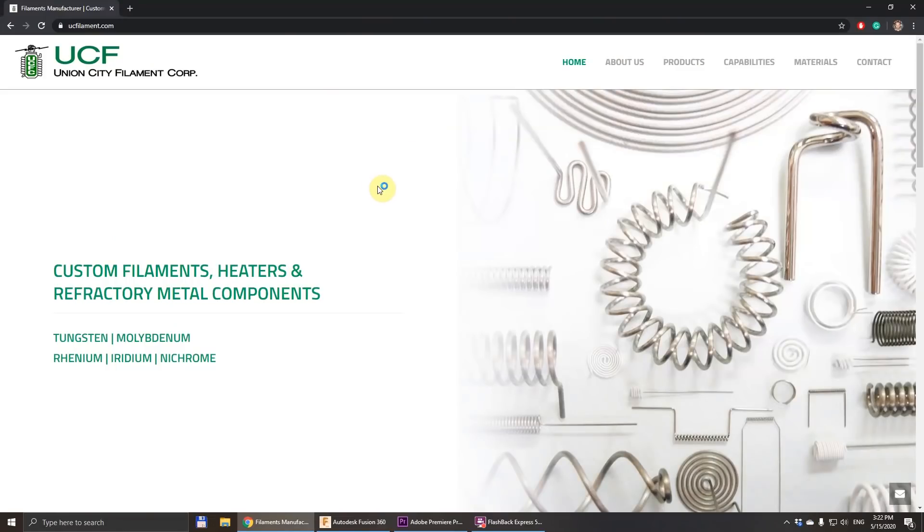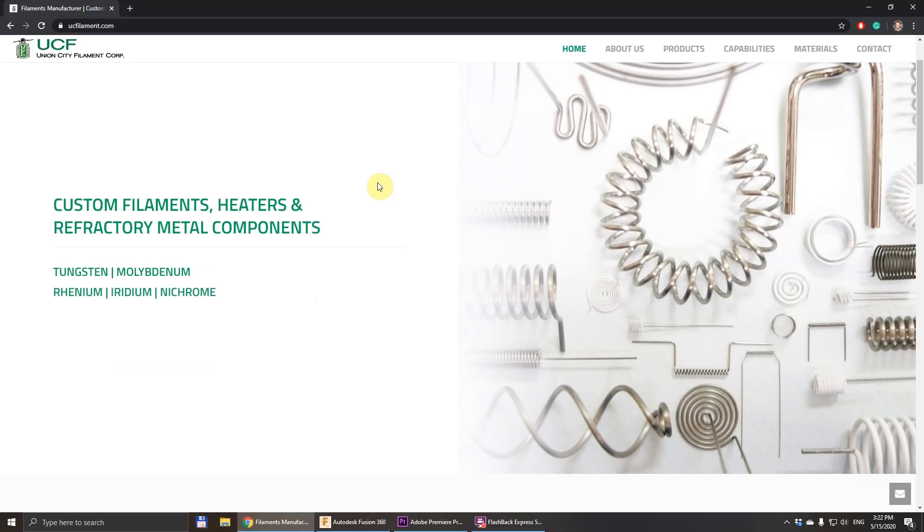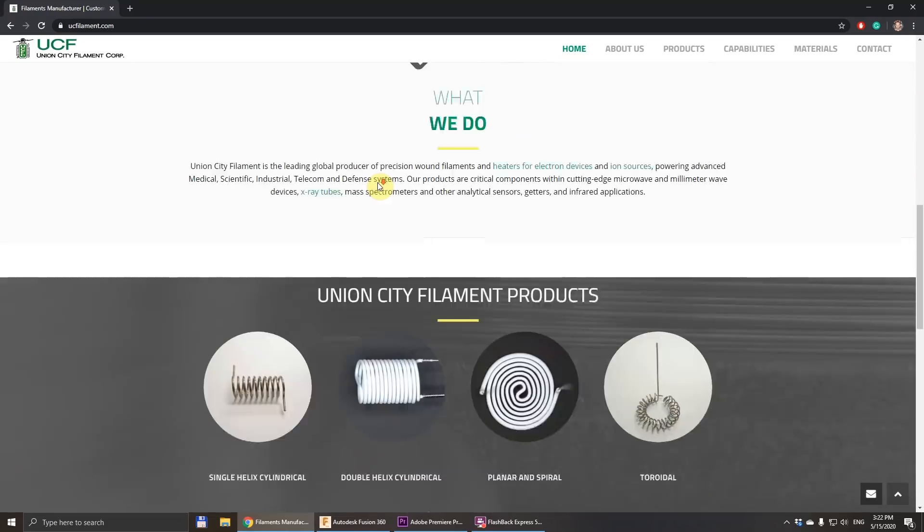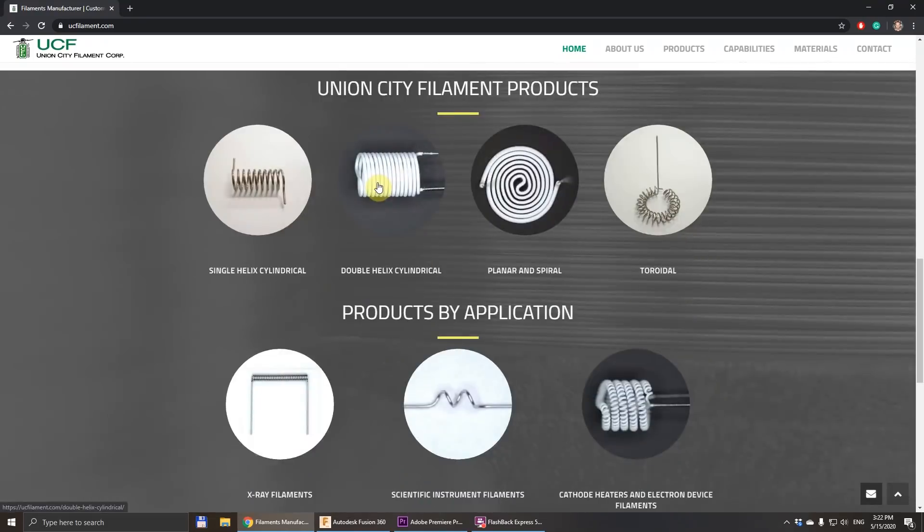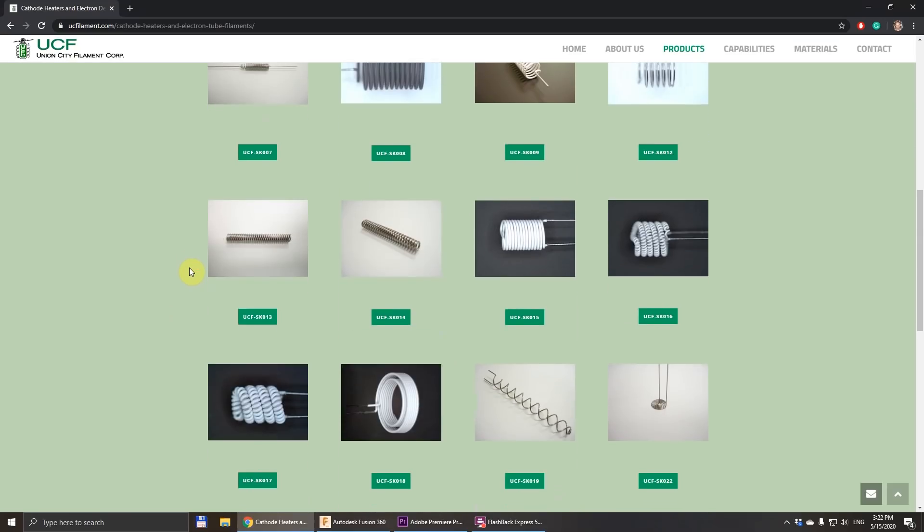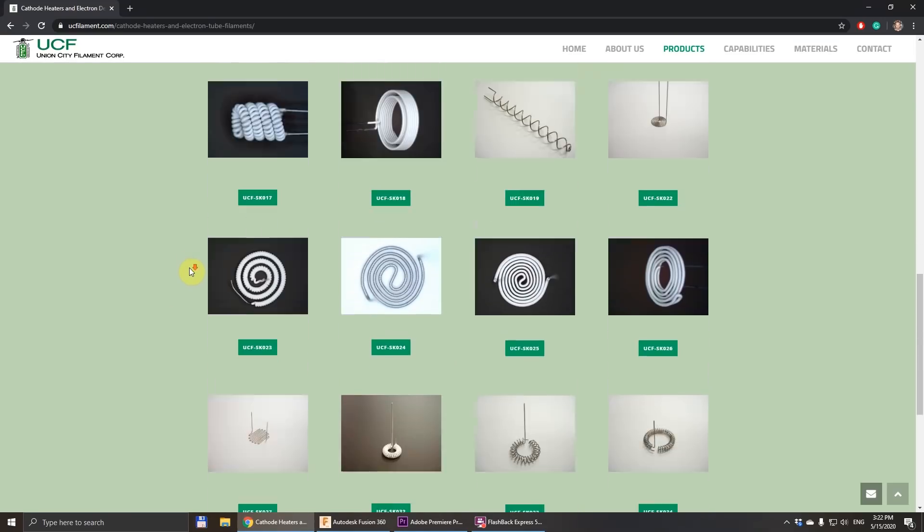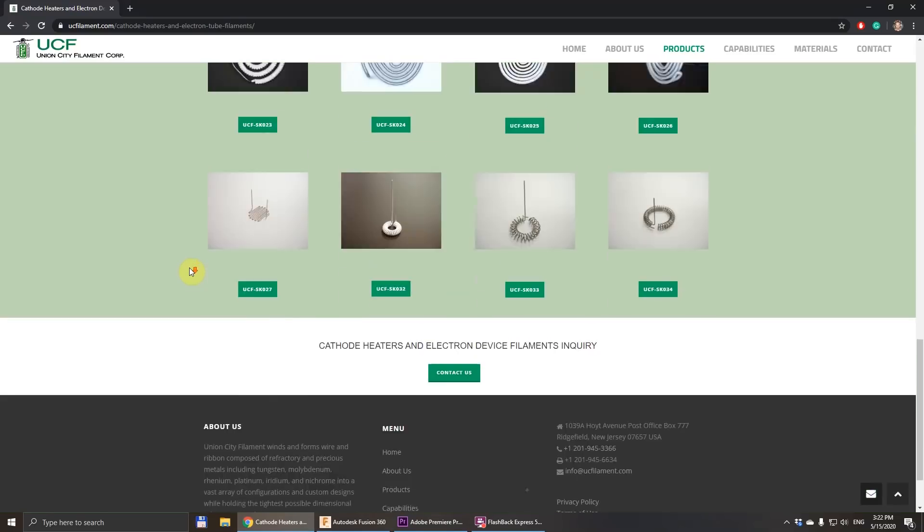So I thought that there must be still a company making these filaments because the coated filaments are used in a lot of modern devices like mass spectrometers and other stuff. I was searching a little bit on the internet and I found a company called Union City Filaments. They manufacture exactly what we need. They do custom filaments with custom shapes, custom coating, everything. This is really exactly what we need.